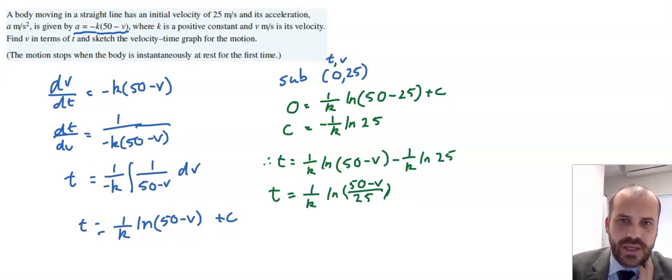Now, of course, we want v by itself. v is equal to something, something, t. So, we need to rearrange this, and it's going to turn into some exponential-looking thing.